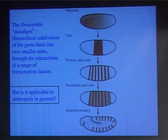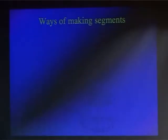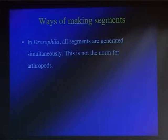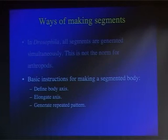The question is whether this scheme is applicable to arthropods in general, and the answer is a very strong no. In Drosophila, all the segments are generated simultaneously. Most arthropods generate segments very differently — sequentially. There's a group of segments, usually four to six or maybe eight, that are generated more or less at once, and then more segments are added one at a time from the posterior of the embryo. In an animal generating segments sequentially, there are a few basic stages the embryo must follow to generate a segmented body plan.